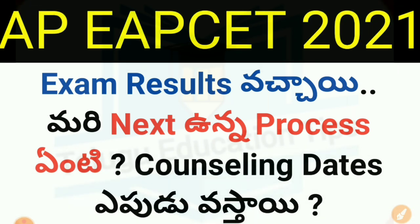You can do counseling and also work with the web option, seat allotment, and web option. If you have a process, then follow it. Try and keep the counseling going. If you have a review of the documents, you will find a list of the documents.